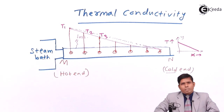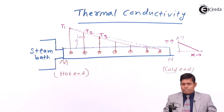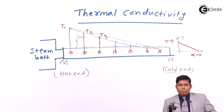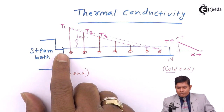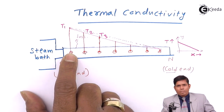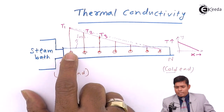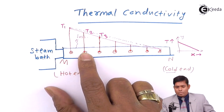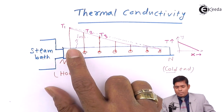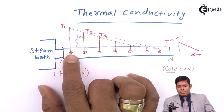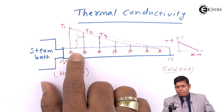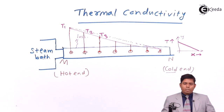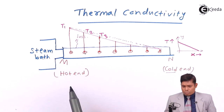Why does the temperature stay fixed? After steady state is reached, the temperature is not rising, meaning the object is not absorbing heat. The heat that comes to a particle is not absorbed; it is just transmitted or conducted to the next particle. So whatever heat flows in is equally transmitted to the neighboring molecule and comes out the other end.